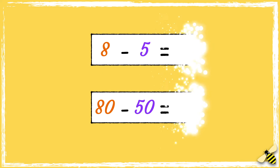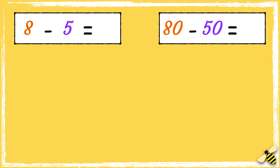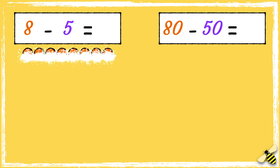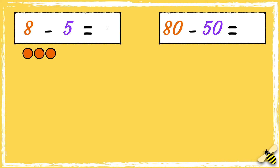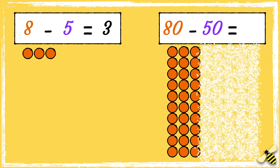Here are two number sentences. Can you use the answer to the first number sentence to work out the answer to the second number sentence? We know that 8 take away 5 equals 3, so 80 take away 50 equals 30.